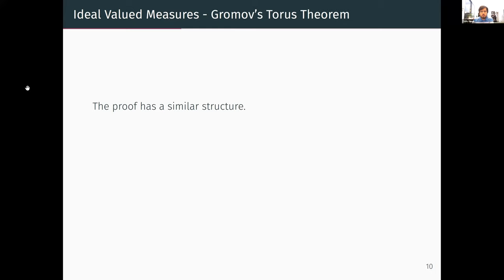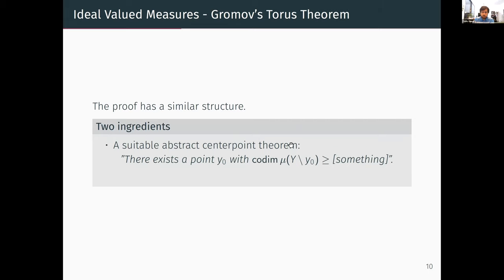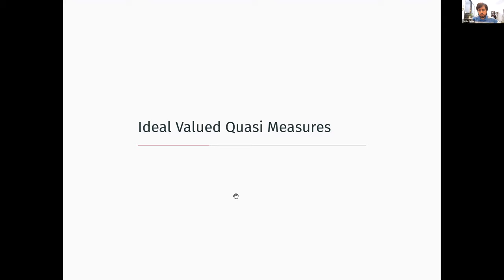Gromov's torus theorem has a very similar proof structure: first prove a suitable abstract center point theorem — there exists a point y₀ where the co-dimension of the measure of its complement is at least some lower bound — and second apply push-forward IVMs to deduce something about fibers. Now let us discuss the symplectic counterpart: ideal valued quasi-measures.